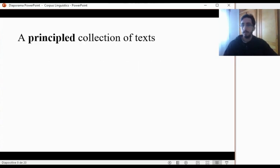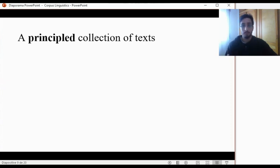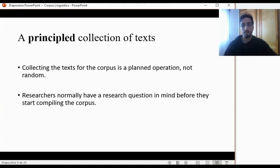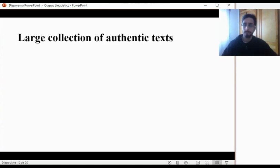A principled collection of texts. Let's go back to the example in which you were the teacher, interested in investigating your students' language. You were interested in seeing how your students use English in their writings. Did you collect your students' oral production? Did you collect their grammar assignments? No — you collected your students' writings. Since you already have a goal or an objective in mind, you collect your data according to that objective. This is what we mean by 'principled collection of texts'. Collecting the texts for the corpus is a planned operation and not random. Researchers normally have a research question in mind before they start compiling or designing the corpus.